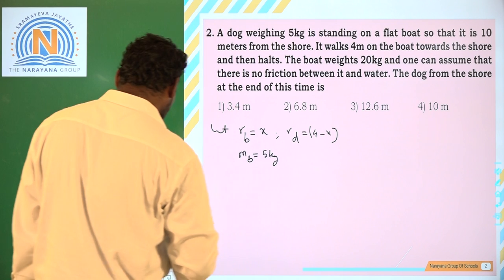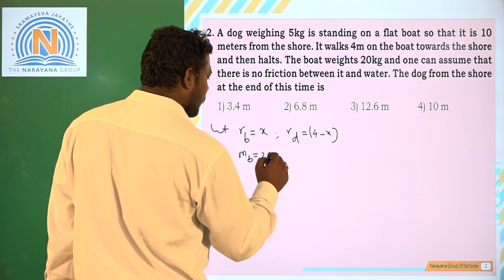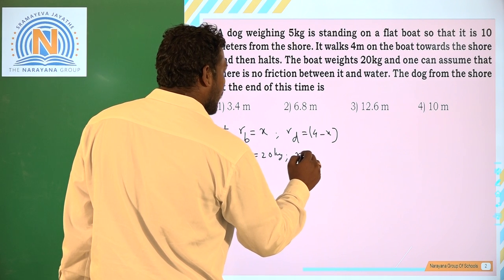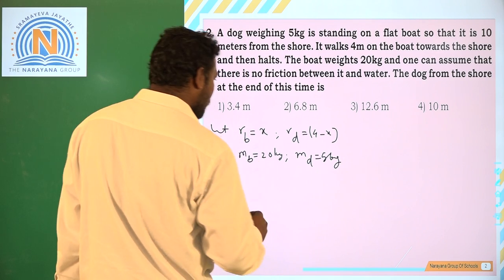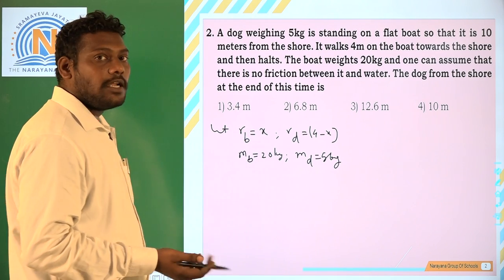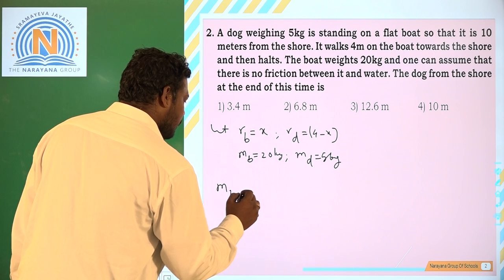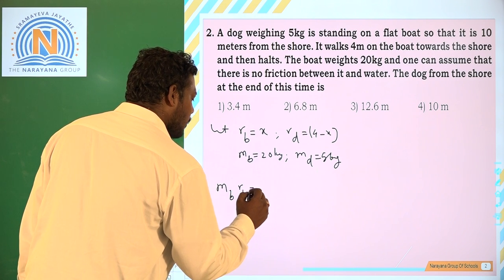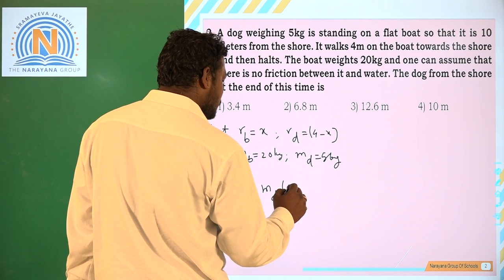Because it is moving 4 meters towards shore. And mass of the boat is 20 kg. And mass of the dog is 5 kg. Now if we assume that the center of mass is at origin, then mass of boat into position of boat should equal mass of dog into position of dog.